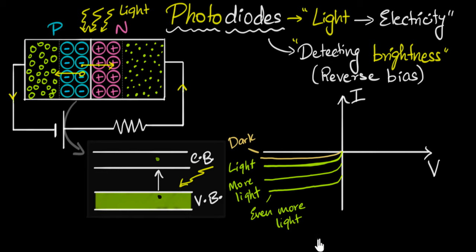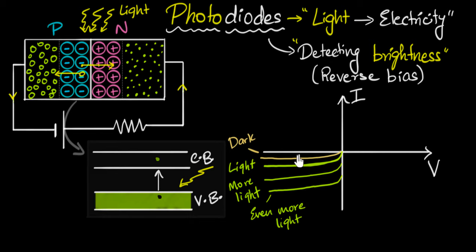Where would we use photodiodes? One application is automatic street lights — if the current is below a certain level, meaning it's very dark, the circuit switches the street light on; if the current is above a certain level, it switches off. Another example is note counters in banks — a laser shines on a photodiode giving high current, and every time a note cuts the laser, the current drops and recovers, and a circuit counts each drop as one note. Using lasers, LEDs, and photodiodes together, we can do a lot of wonderful things.